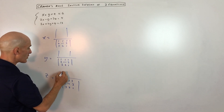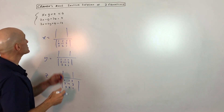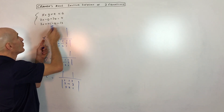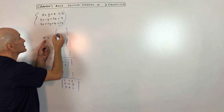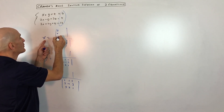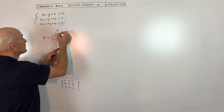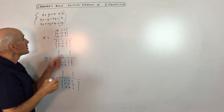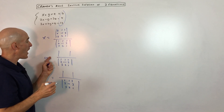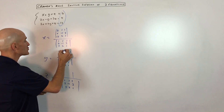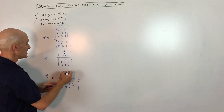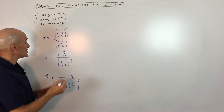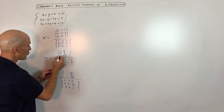Now for the numerator, we use the same coefficients but when we're solving for x, we replace the x coefficients with the solutions. So I'm going to put 6, 4, and 13 in the first column, and then put the remaining coefficients in the second and third columns. All I did is replace the x coefficients with the solutions.